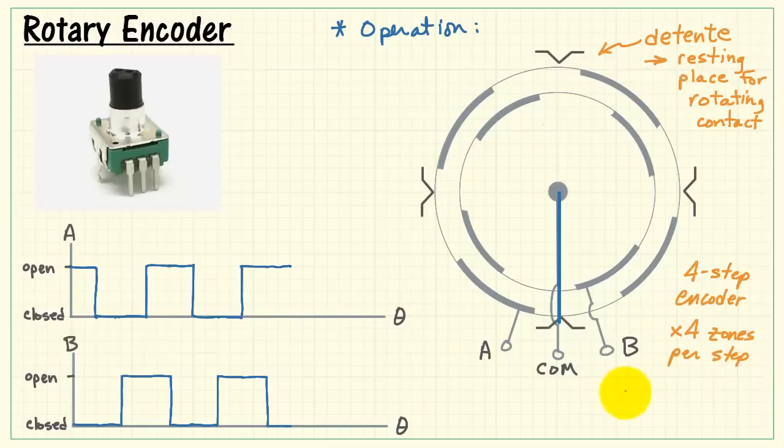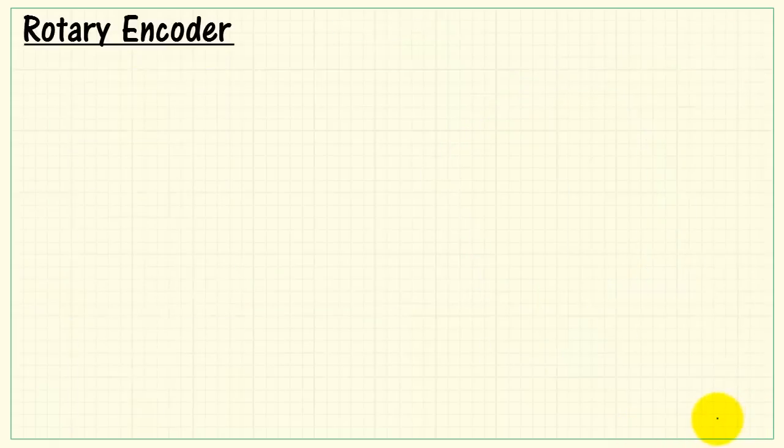It has four zones per step. That means that we have 16 unique zones for one revolution. Generally, the rotary encoders will have many more zones available.